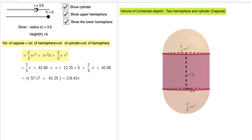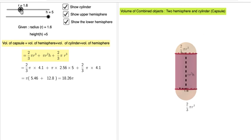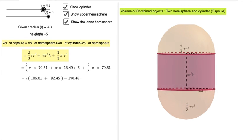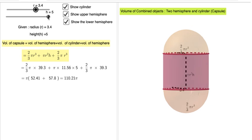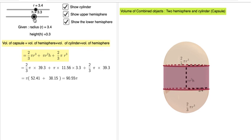Now you can increase or decrease your radius, and you can increase or decrease the height of the capsule.